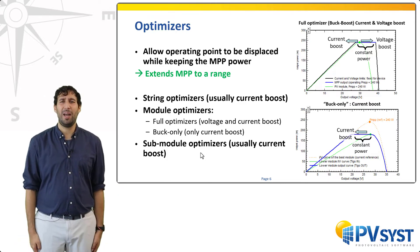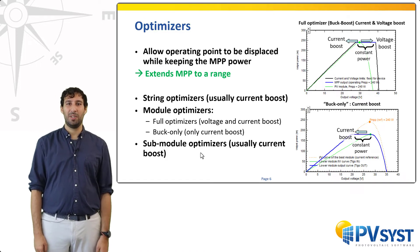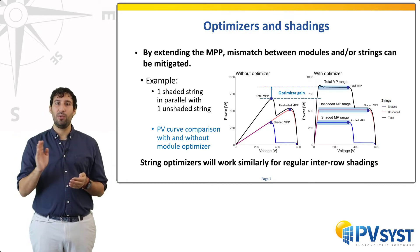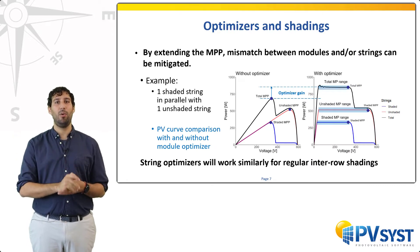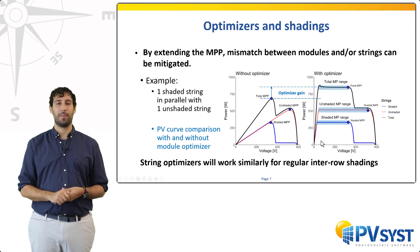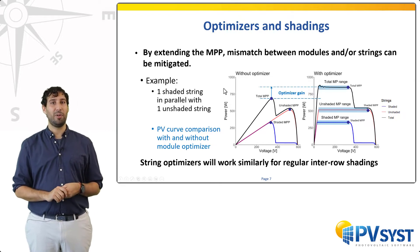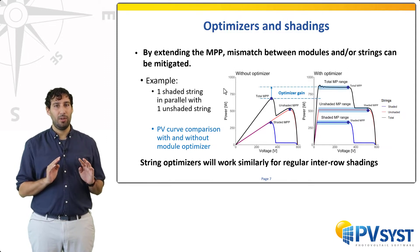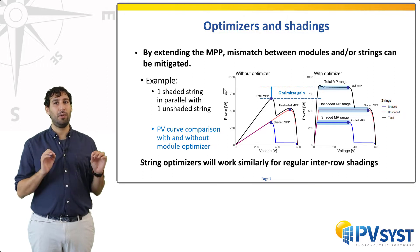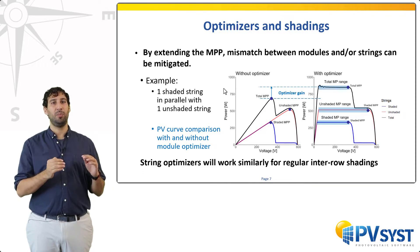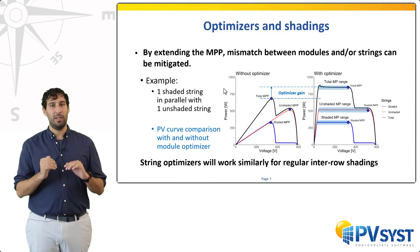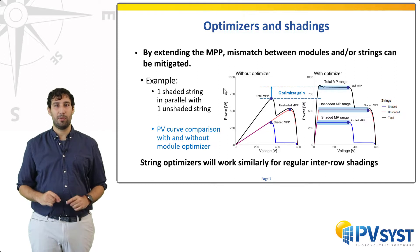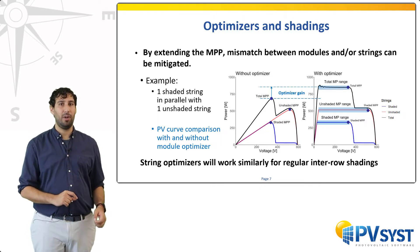It is easy to understand how optimizers improve production in the context of shadings. By extending the MPP to maximum power ranges, it is easier to find an operating point that fits all maximum powers of the individual components. In our earlier example of two strings in parallel, one shaded and one unshaded, one can see that using module optimizers there is now a range of voltages that allows the maximum power to be the sum of both individual maximum powers. You could reach the same results with string optimizers, and slightly better with sub-module optimizers.